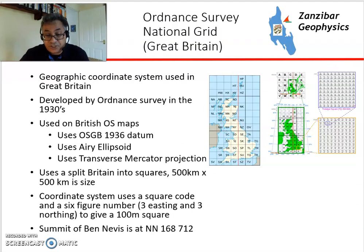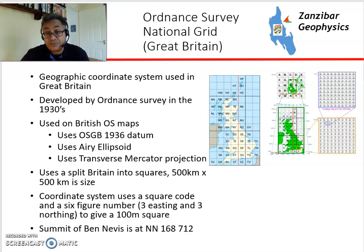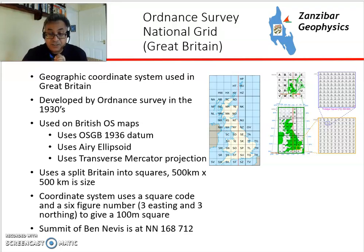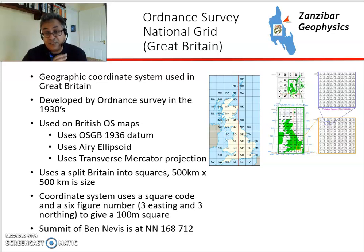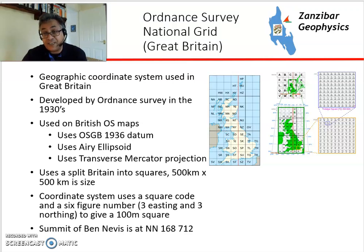An example of a national system is the British National Grid, developed by the Ordnance Survey of Great Britain in the 1930s. It uses Datum OSGB 1936, the Airy ellipsoid developed in the 19th century — a particular favourite of the British — and uses the Transverse Mercator projection. It splits Britain into 500 by 500 kilometre squares. A six-figure number — three easting, three northing — gives you a 100 metre square, and a 12-figure reference gives you effectively a one metre square. For example, the summit of Ben Nevis is located within a particular square in this system.